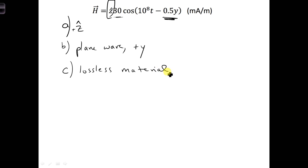And with lossless materials, it's common to use K for the wave number. Later on you'll see beta used for the wave number.